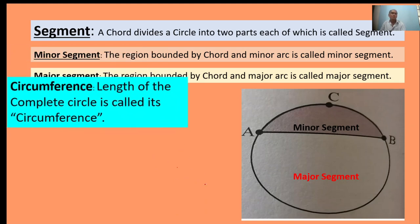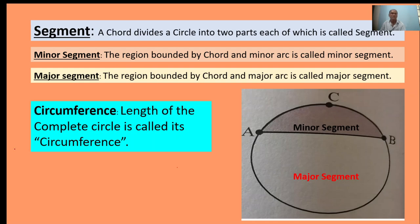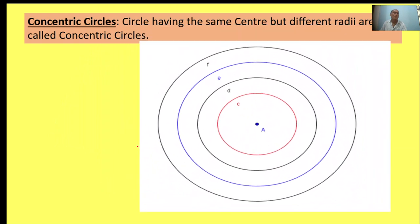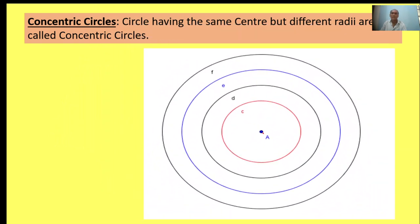The length of the complete circle is called its circumference. Concentric circles: circles having the same center but different radii are called concentric circles. Here, circles with the same center A but different radii - this is called concentric circles.